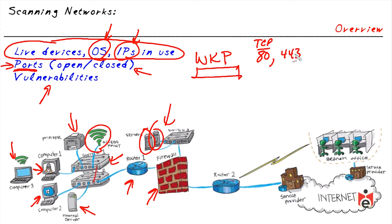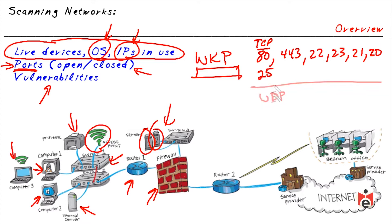Other common TCP well-known ports include 443 for TLS/SSL, port 22 for SSH, port 23 for Telnet (plain text), FTP control port 21 and data port 20 depending on the FTP flavor, and SMTP on port 25. On UDP, well-known ports include 53 for DNS and 123 for Network Time Protocol.